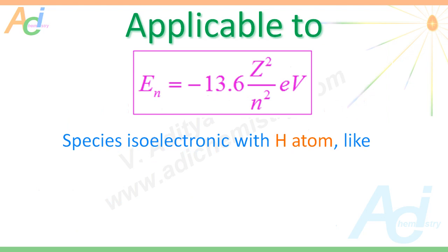Don't forget that this equation is only applicable to atoms or ions which are isoelectronic with hydrogen atom, like He⁺, Li²⁺, Be³⁺, etc. Isoelectronic species contain the same number of electrons. For example, hydrogen atom contains only one electron, and He⁺, Li²⁺, and Be³⁺ also contain only one electron each. Hence, these are isoelectronic with hydrogen atom.